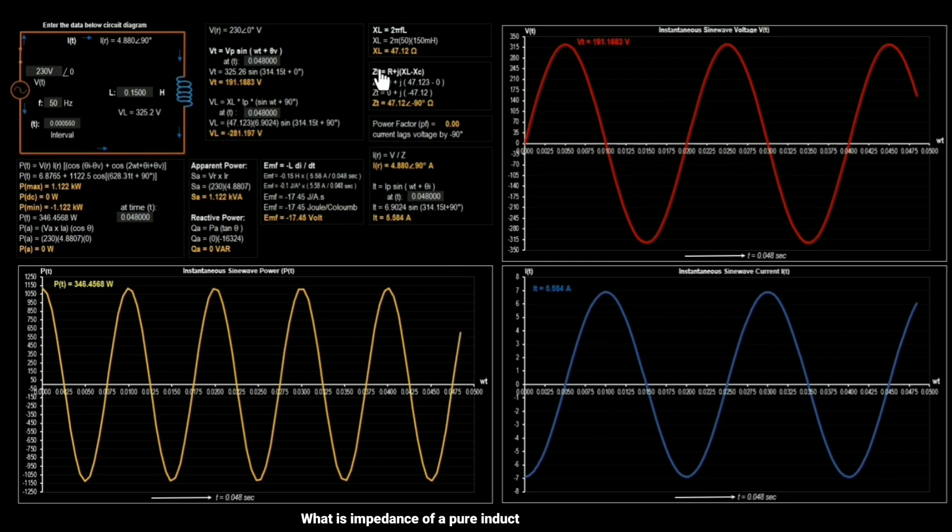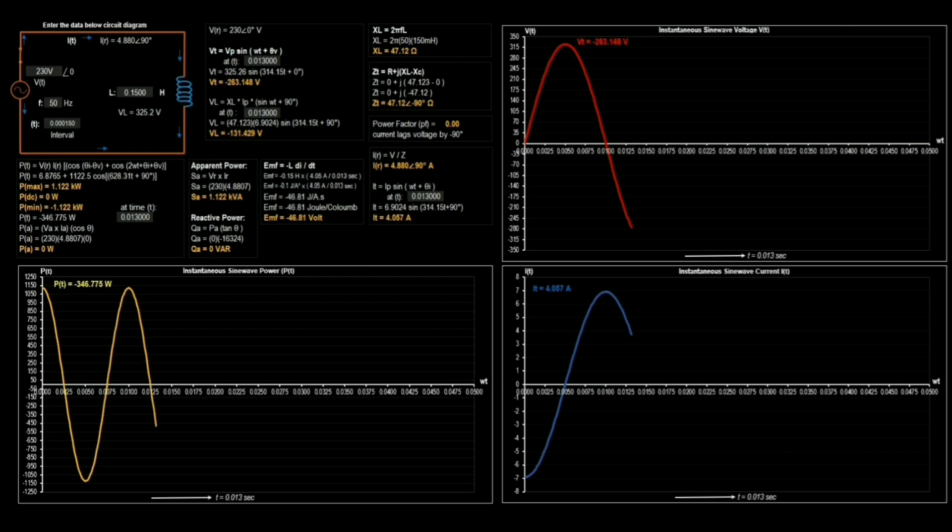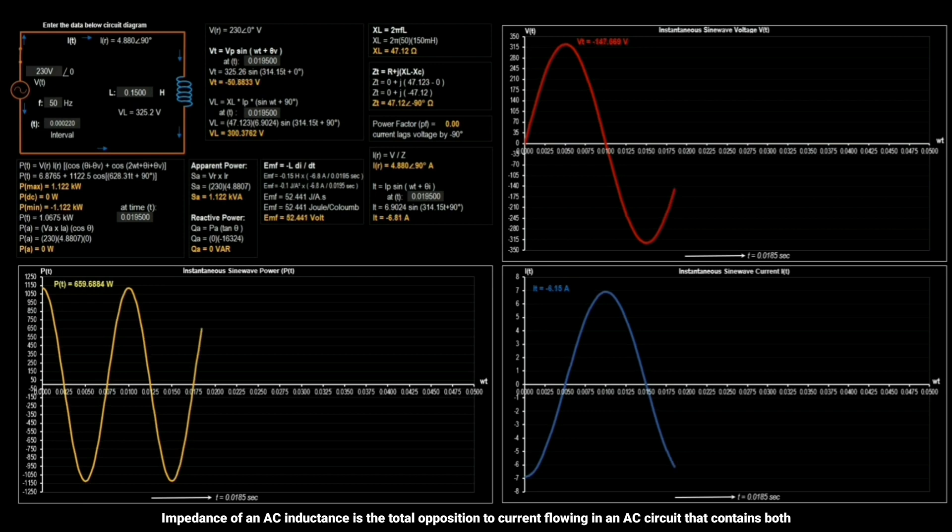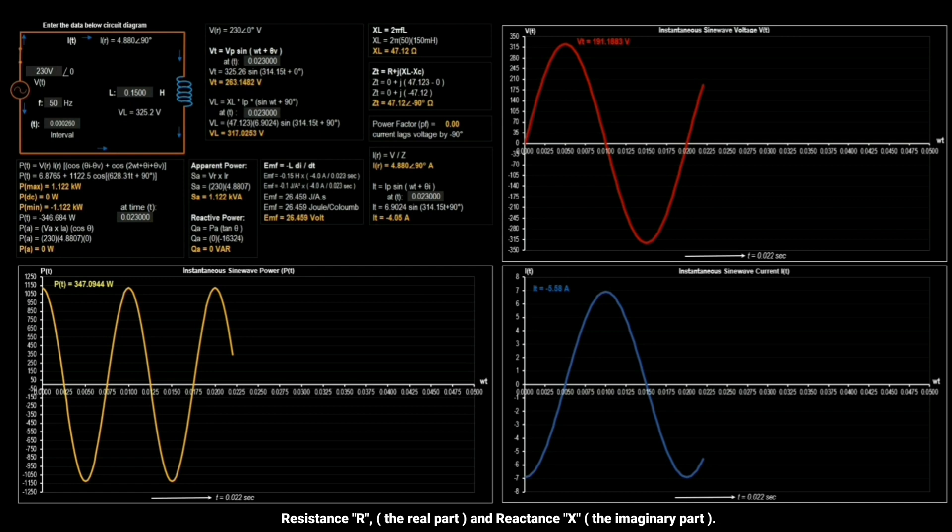What is impedance of a pure inductive in electrical AC circuits? Impedance of an AC inductance is the total opposition to current flowing in an AC circuit that contains both resistance, the real part, and reactance, the imaginary part.